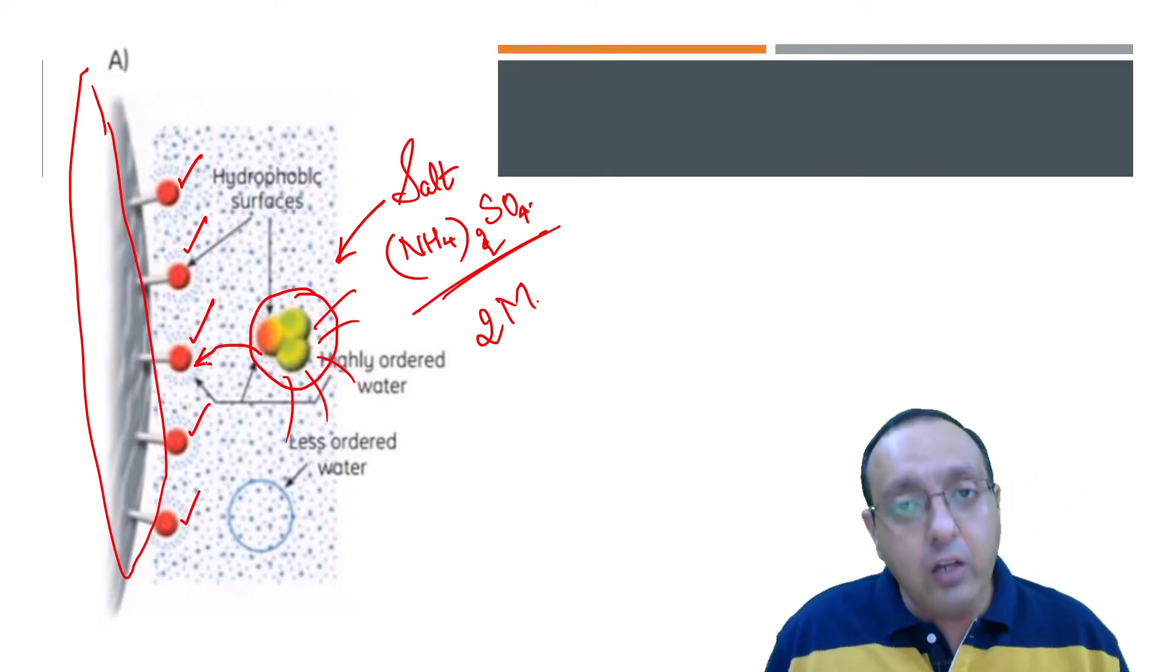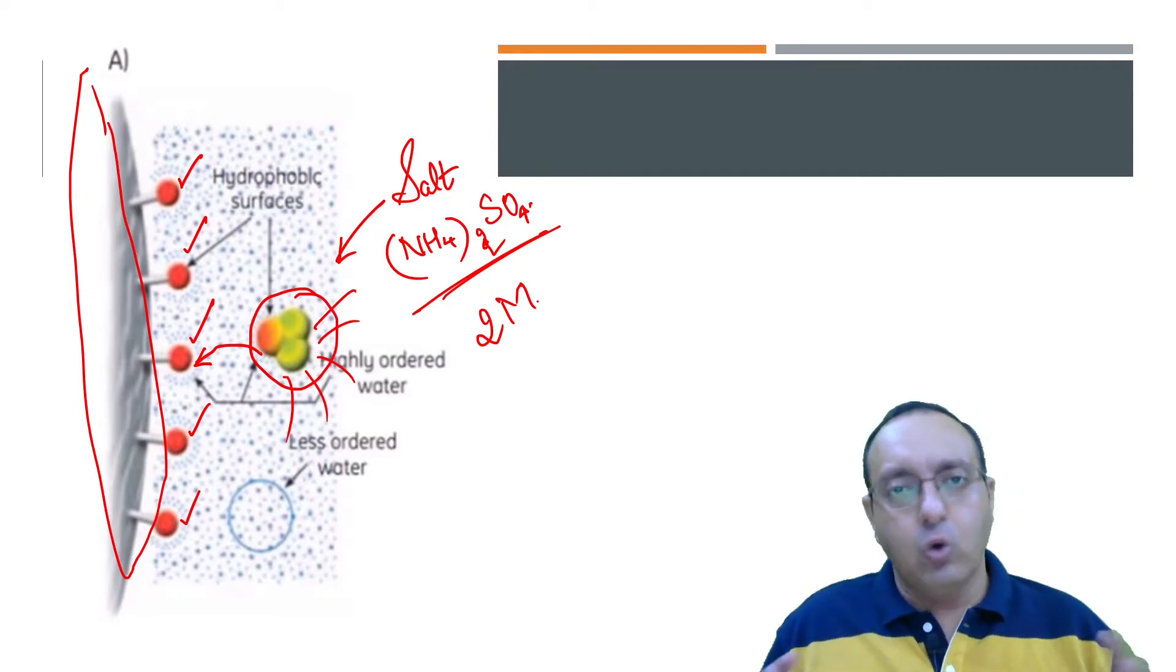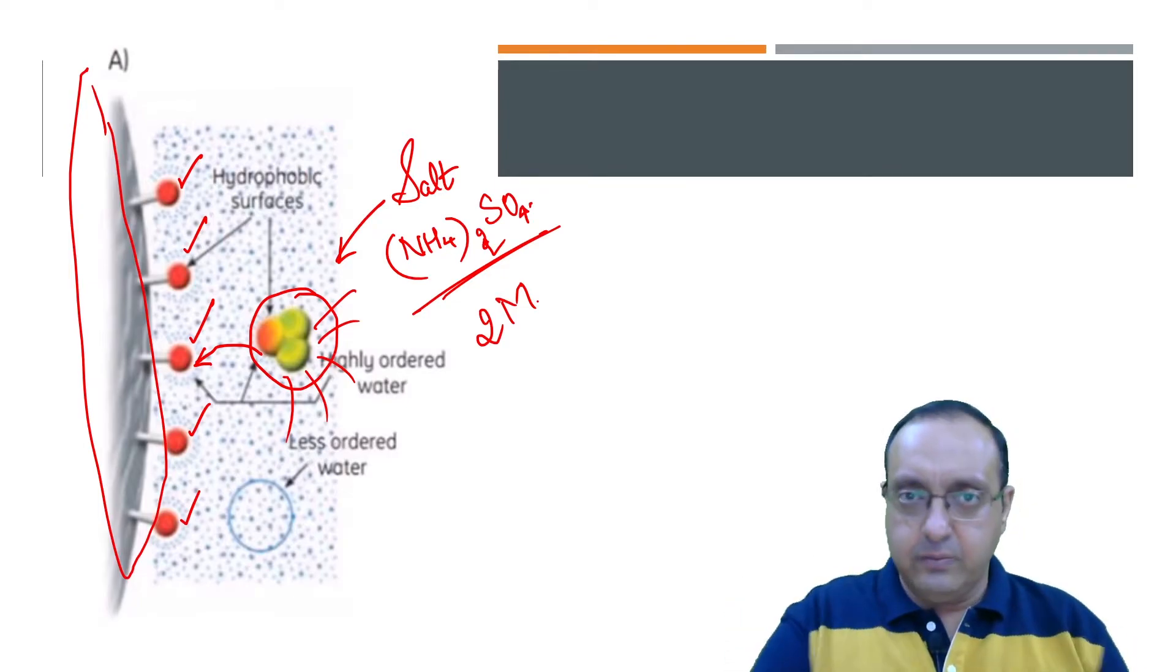And the more hydrophobic a protein is, it will need even less salt to get it attached to the matrix. So the most hydrophobic will attach first, the least hydrophobic will attach the last.